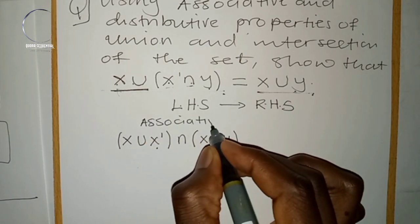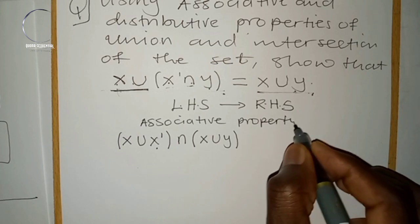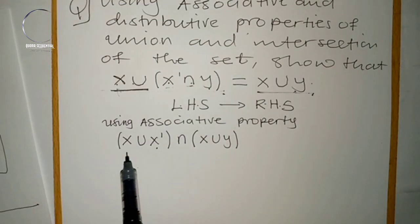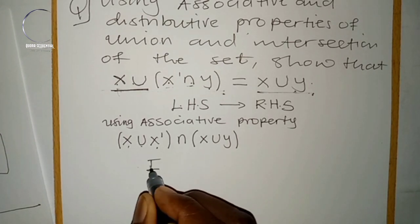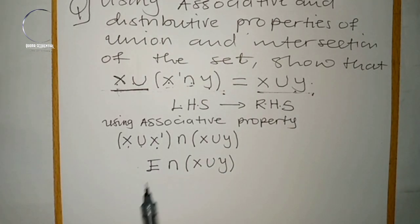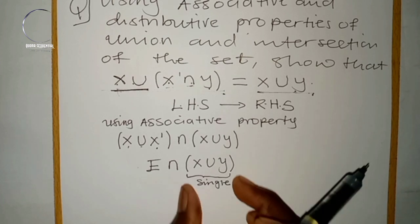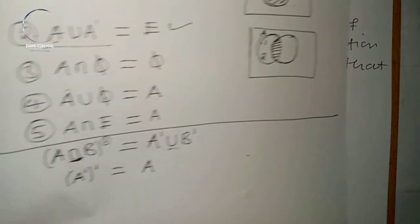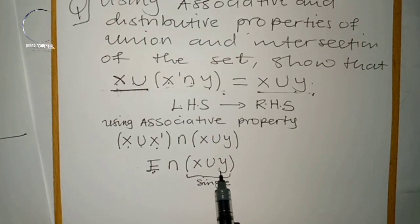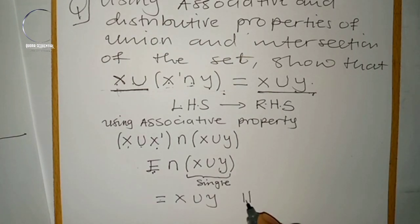So we now have U ∩ (X ∪ Y). According to rule five, a given set intersected with the universal set gives the set itself. Therefore, U ∩ (X ∪ Y) = X ∪ Y, which is the right-hand side. Hence proved.